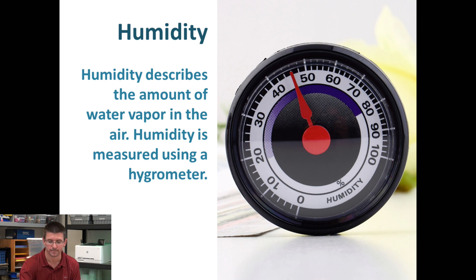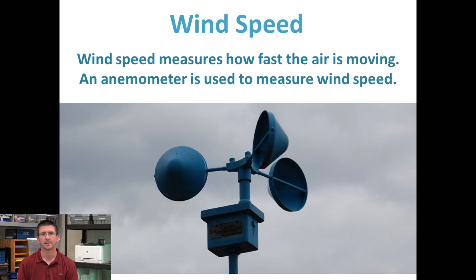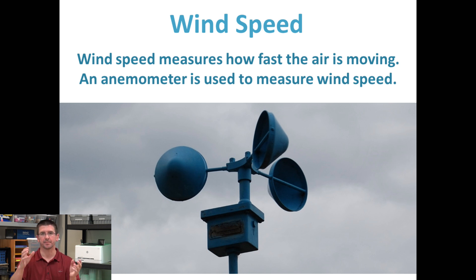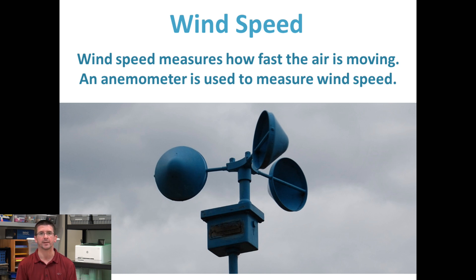Wind speed is a good predictor of how weather might change in an area, because if air is moving it may be bringing in clouds or bringing in sunny weather. We can measure the wind based on how fast it's blowing, and that's done with what's called an anemometer. It has cups that spin around as the wind blows through them, and by how fast they're spinning you can determine how fast the wind is actually blowing at your location.